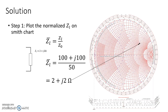To plot this, we find the resistance circle with value 2, and the reactive circle with value 2. Wherever they intersect is the ZL impedance point, as shown in the figure.